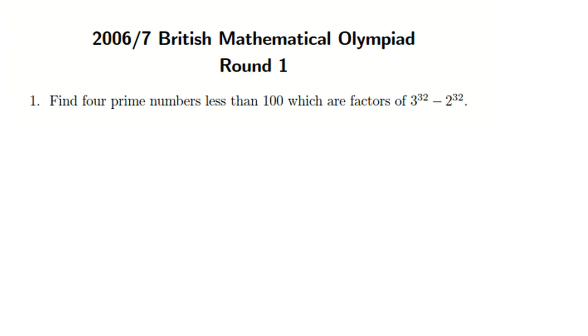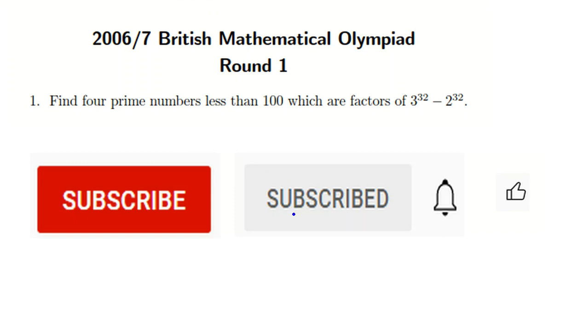We are going to solve this problem of BMO British Mathematical Olympiad Round 1, problem number 1. It says find 4 prime numbers less than 100, which are factors of 3 to the 32 minus 2 to the 32. Before solving the problem, thanks for the like, subscribing, and turning on notification.